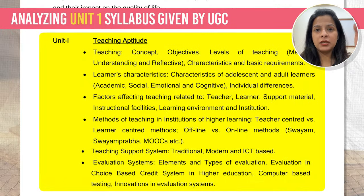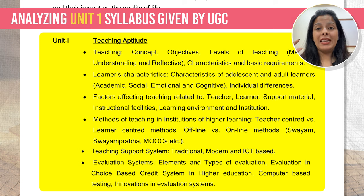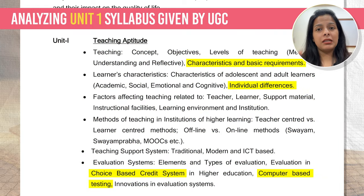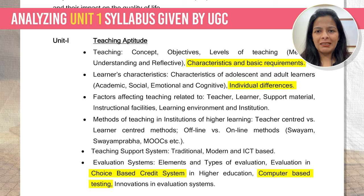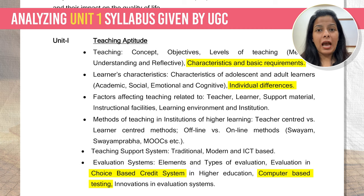One such topic is learning theories. If you go through the entire syllabus, you will not find learning theories mentioned anywhere. But every year, at least one or two questions come in every shift from this particular topic. On the flip side, there are topics listed in the UGC Net syllabus that have not been asked in the exam for the past 3-4 years — like individual characteristics, individual differences, or evaluation in choice-based credit system. So these topics are mentioned in the syllabus, but questions are not coming from them.